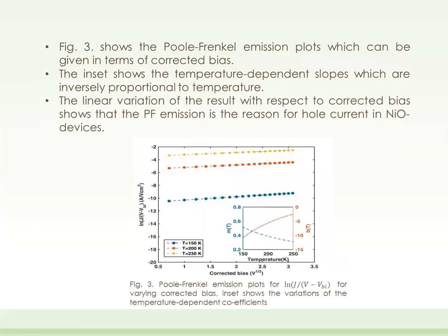Figure 3 shows Poole-Frenkel emission plots in terms of corrected bias. The inset shows temperature dependent slopes M and B, which are inversely proportional to the temperature. The linear results show that PF emission might be responsible for hole current in NiO devices.